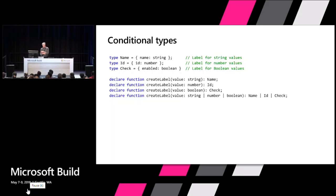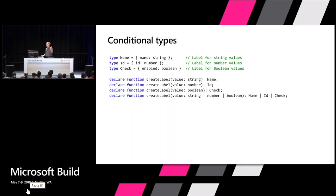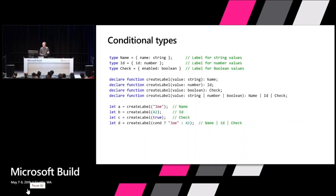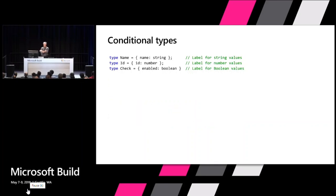Say I want to write a function that takes some value and creates the label corresponding to that value. I'd have to write a bunch of overloads: if you give me a string you get back Name, a number gives Id, a boolean gives Check. But then you might give me a string or number or boolean, and it gets more complex — if you give just string or number you should only get Name or Id back, not Check. You can see how this quickly becomes unwieldy, and really what you want is the ability to express it in the type system more directly. That's what conditional types enable.